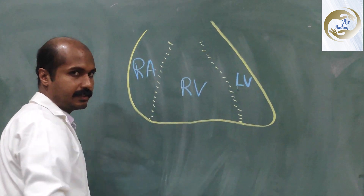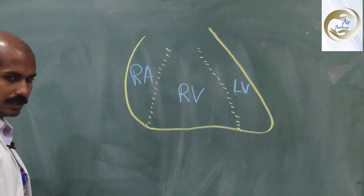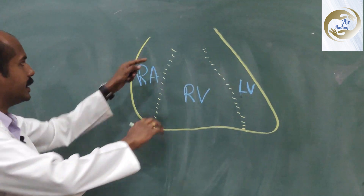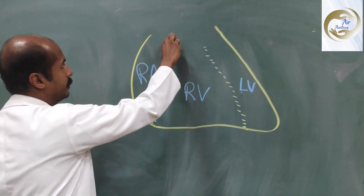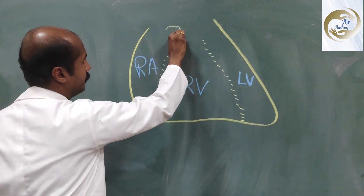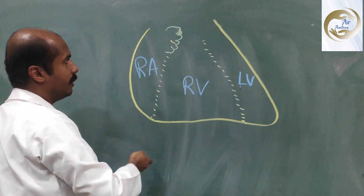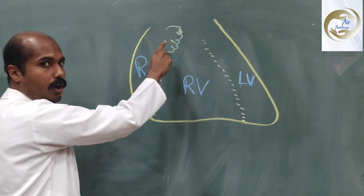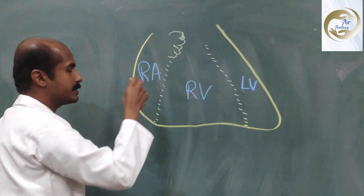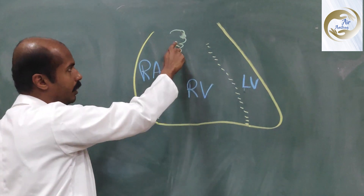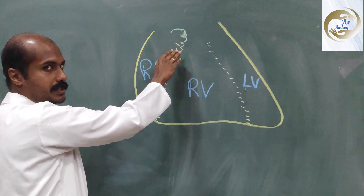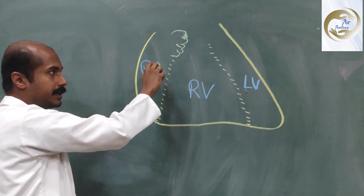The right atrial chamber gives off a pocket that runs like this — this is called the right auricle, also called the right atrial appendage. This looks like the ear pinna, that is why it is called the auricle. This is just a pocket, an extension of the right atrial chamber.